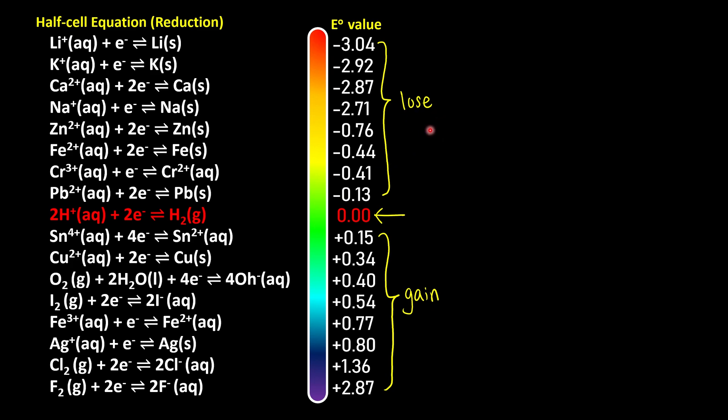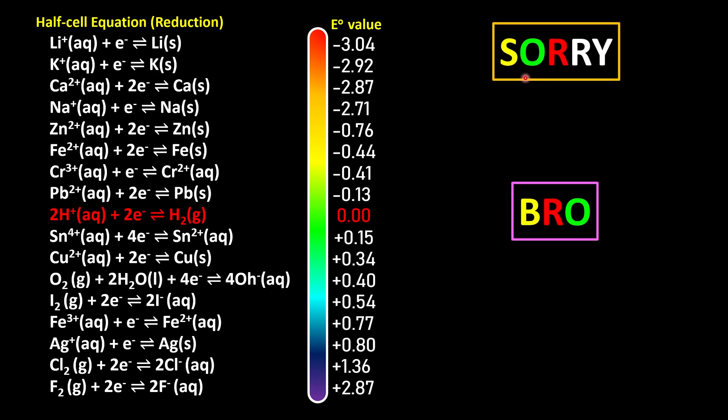So how do we memorize? I don't know. Sorry bro. Sorry bro means whoever has a smaller E° value will undergo oxidation and they themselves are the reducing agents. But once we decide who has a smaller E° value, please reverse the equations.